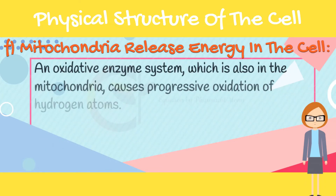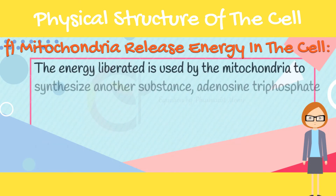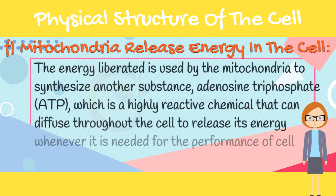An oxidative enzyme system, also in the mitochondria, causes progressive oxidation of hydrogen atoms. The end products of the reactions of the mitochondria are water and carbon dioxide. The energy liberated is used by the mitochondria to synthesize adenosine triphosphate (ATP), a highly reactive chemical that can diffuse throughout the cell to release its energy whenever it is needed for the performance of cell functions.